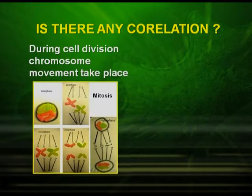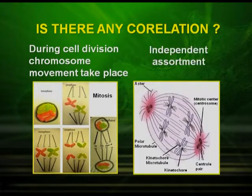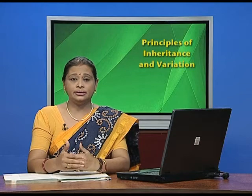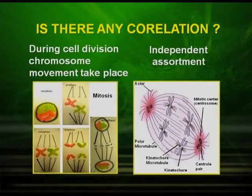During cell division, chromosome movement takes place. At the same time, if you can recall independent assortment during Mendelian inheritance, you could see that the chromosomes assort independently. The Mendelian factors could also assort independently. So this could be correlated with the movement of chromosomes during meiosis — that is, at the metaphase and anaphase stages.